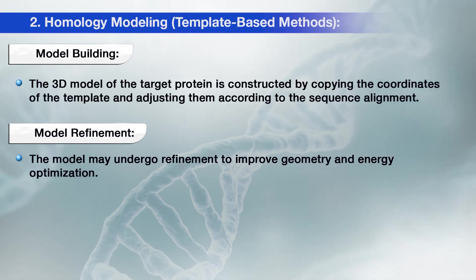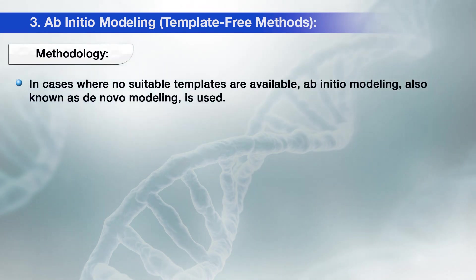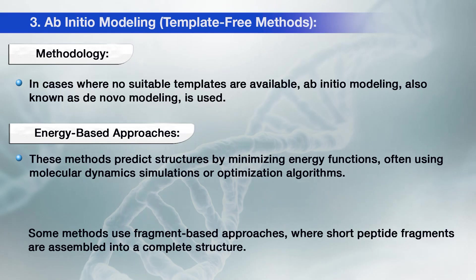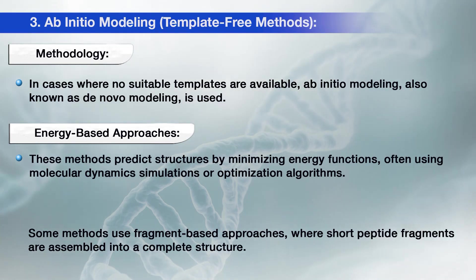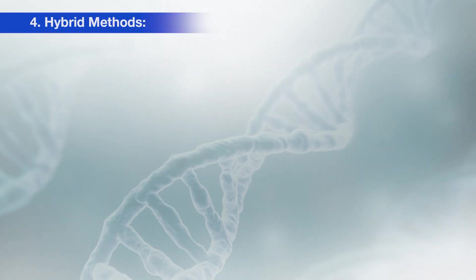In the pipeline, the next method is AB initio modeling, which is known as the template-free method. In cases where no suitable templates are available, AB initio — also known as de novo modeling — is used. It uses energy-based approaches, predicting structures by minimizing energy functions, often using molecular dynamics simulation or optimization algorithms, such as SHARM. Some methods use fragment-based approaches, where short peptide fragments are assembled into a complete structure.